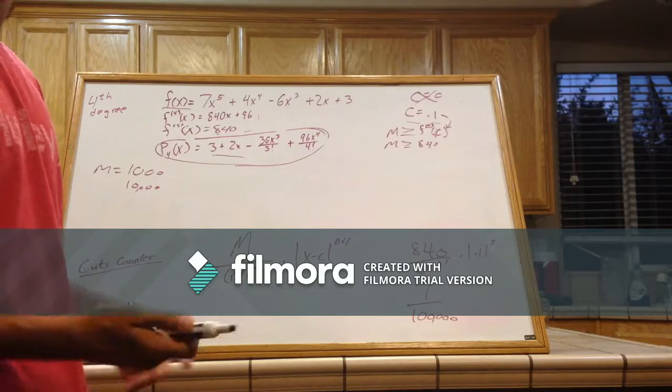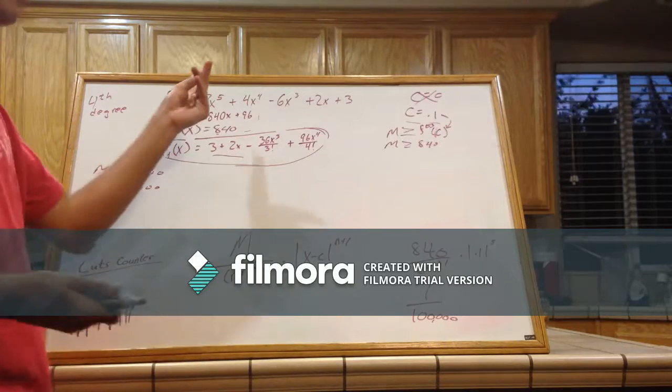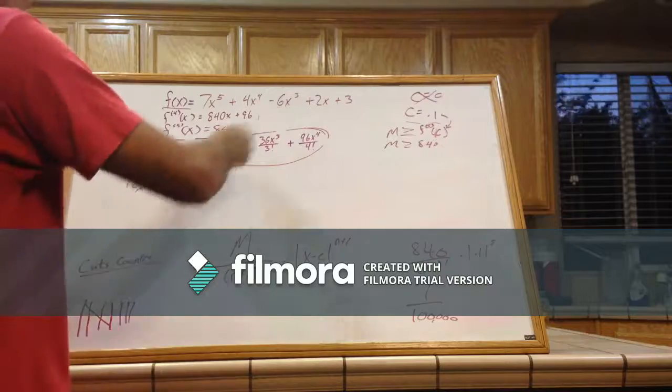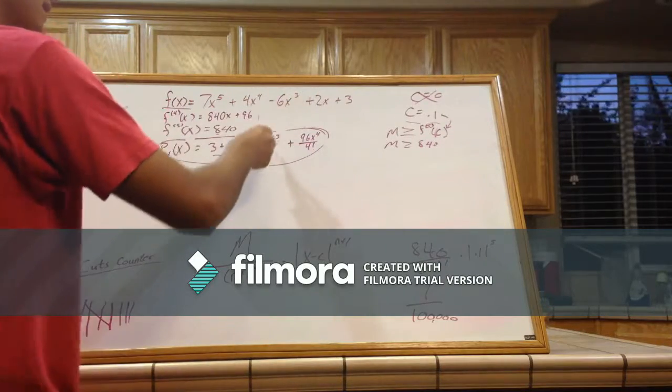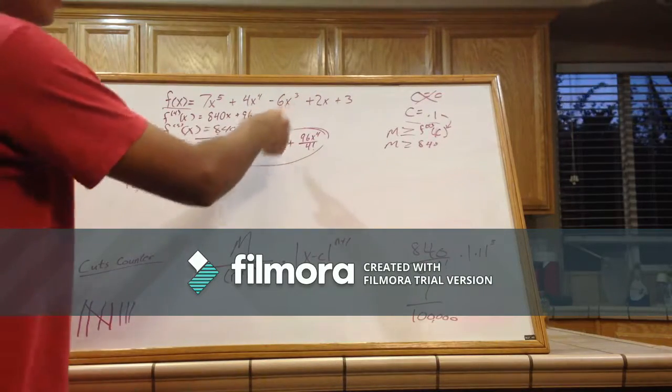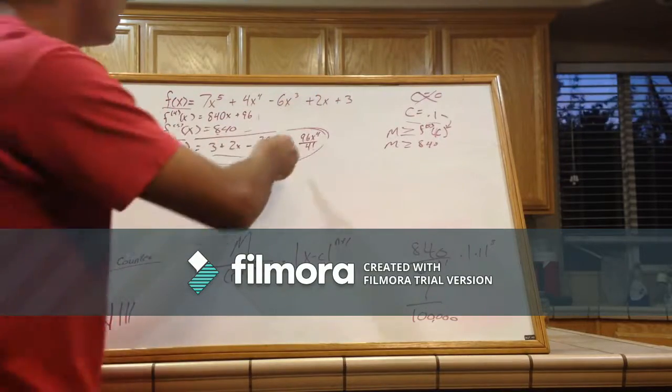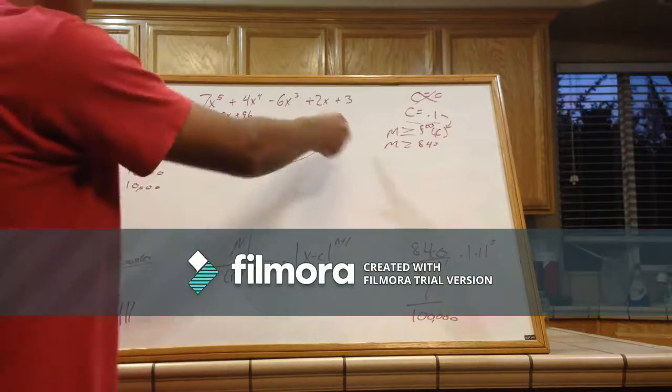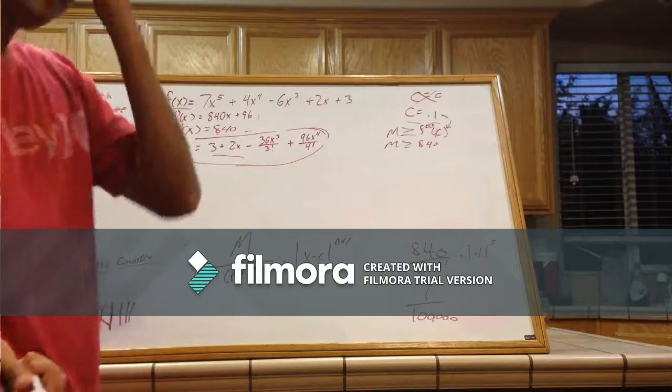And I don't know if you noticed this, but just look, we're kind of building this equation from the back. We have a 3, 3, 2x, 2x, 36x cubed over 3 factorial. Well, that simplifies to 6x cubed. And if we kept going, like, to the next one, it would all work out the same.